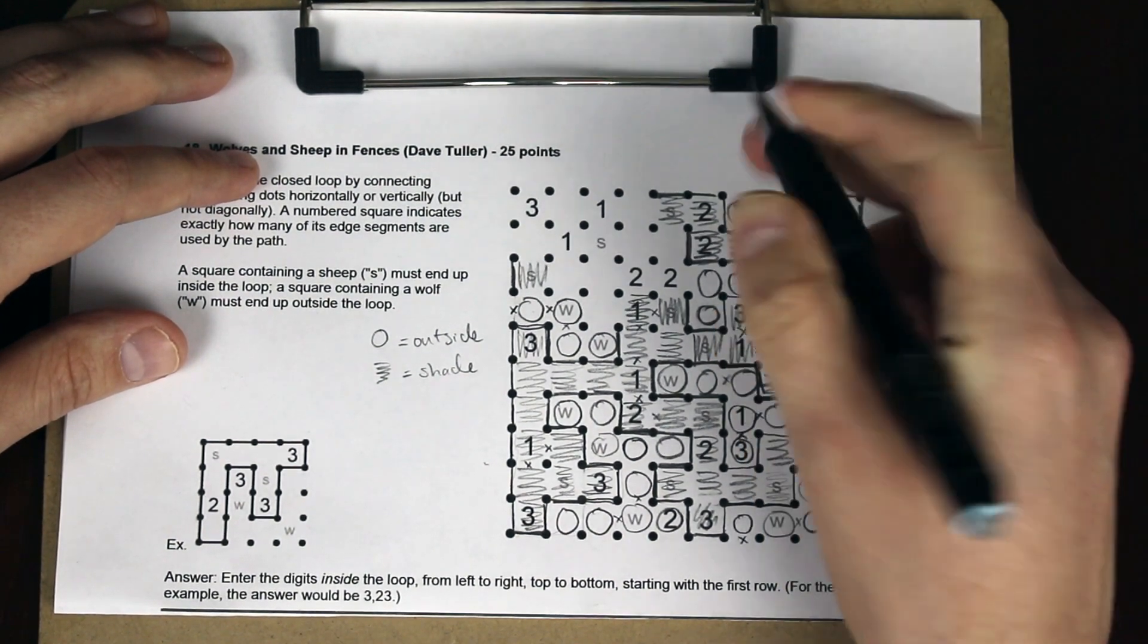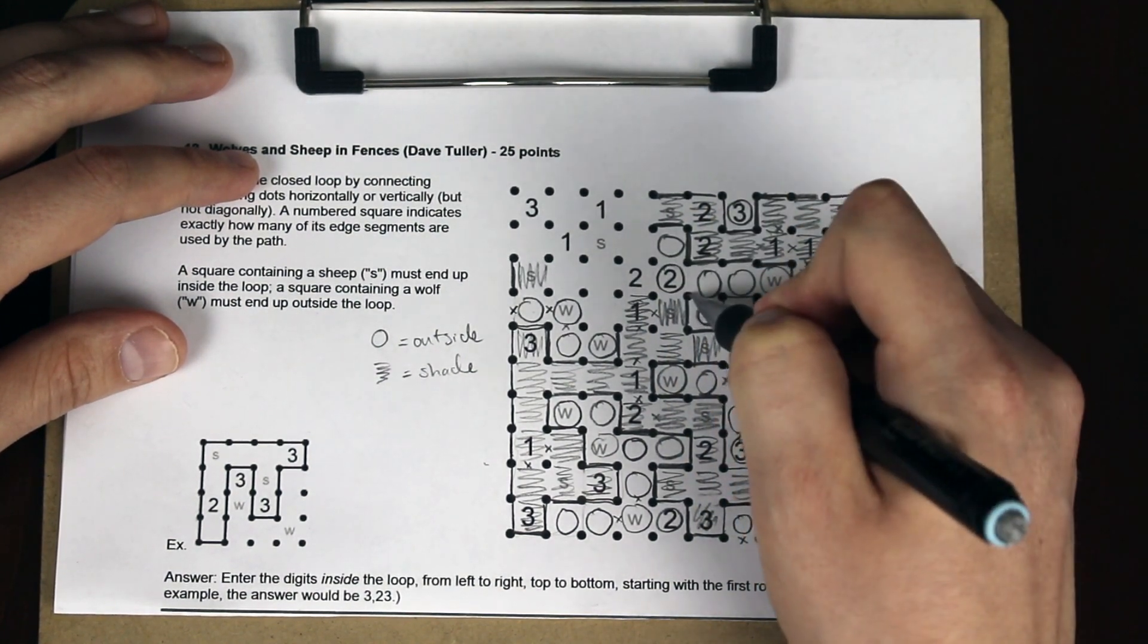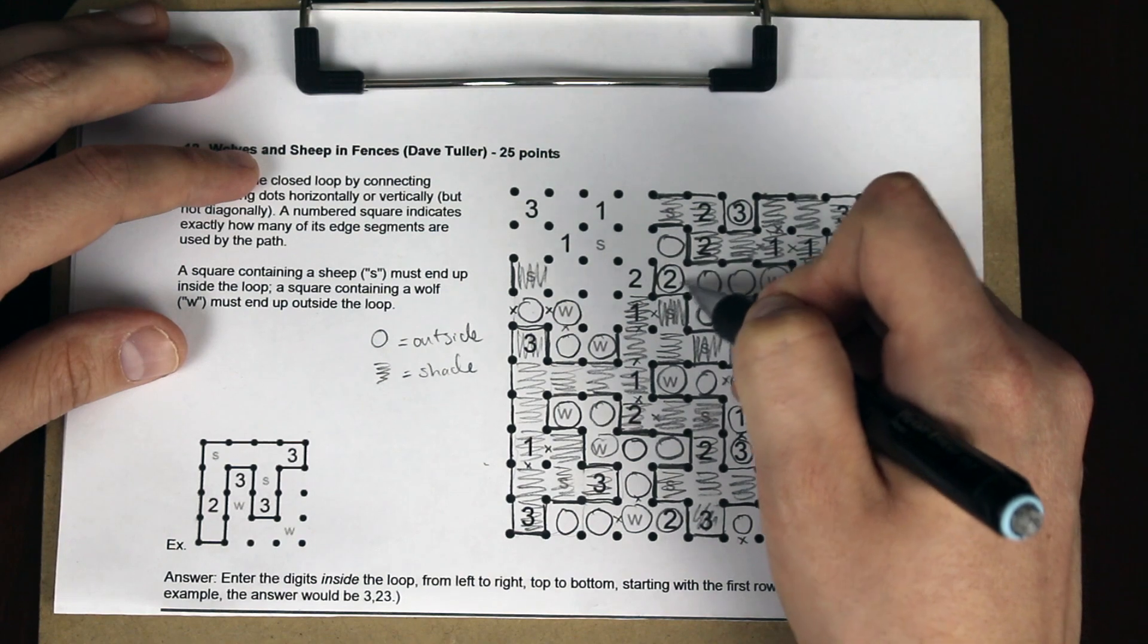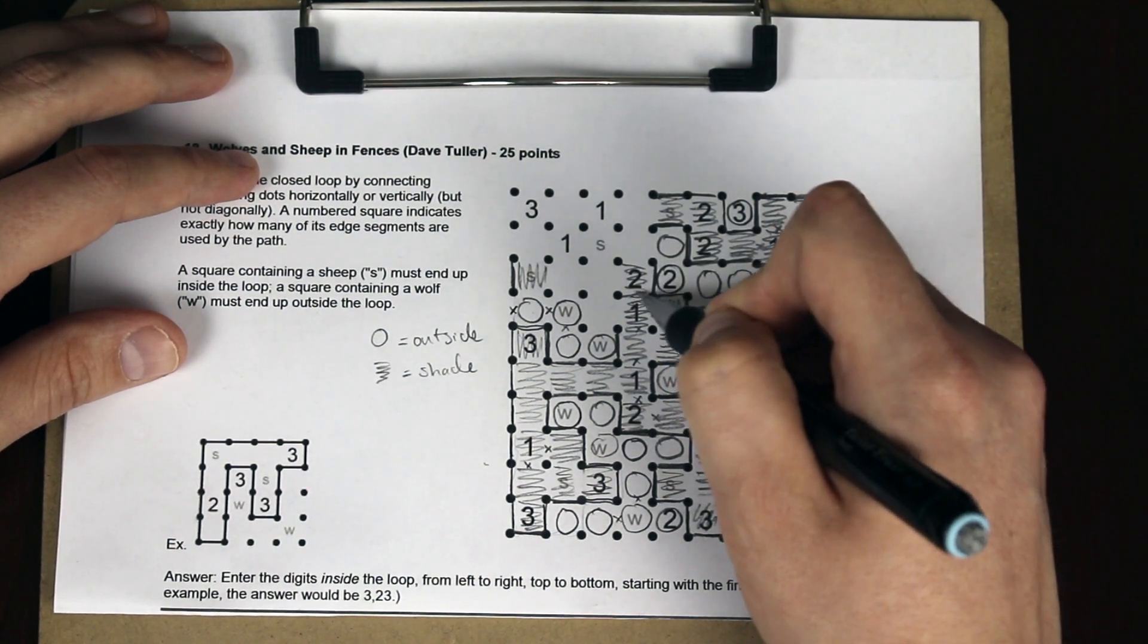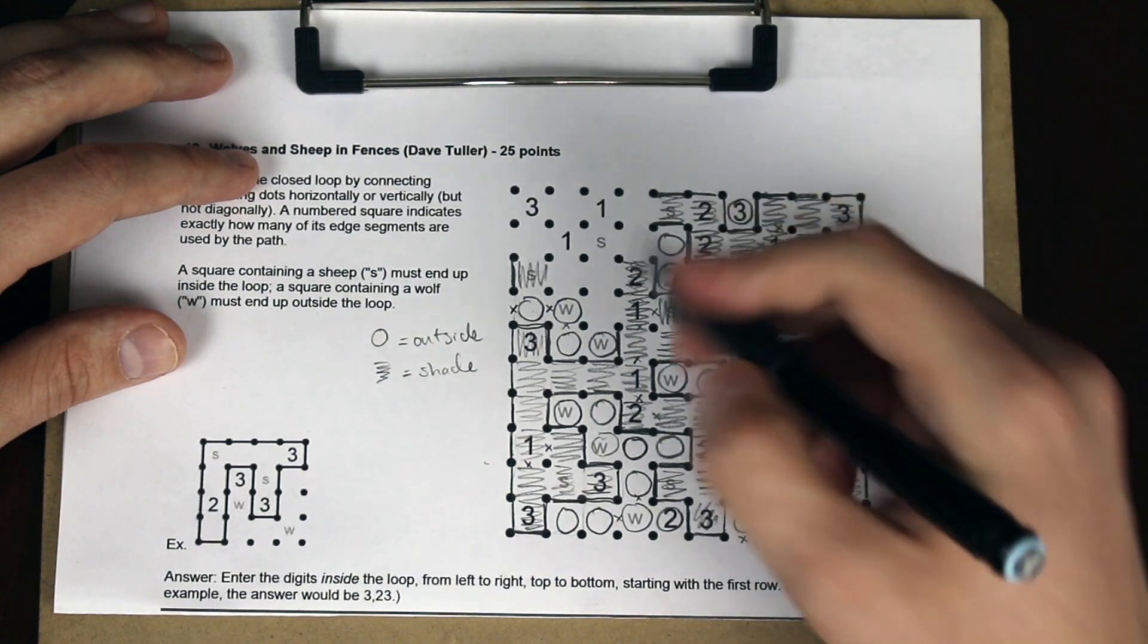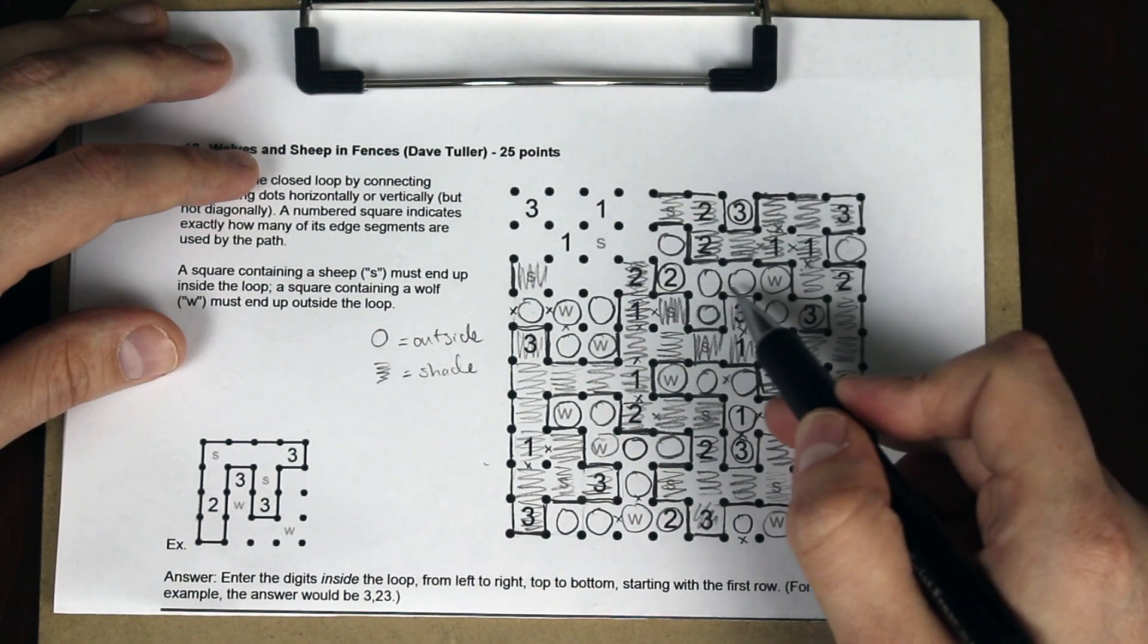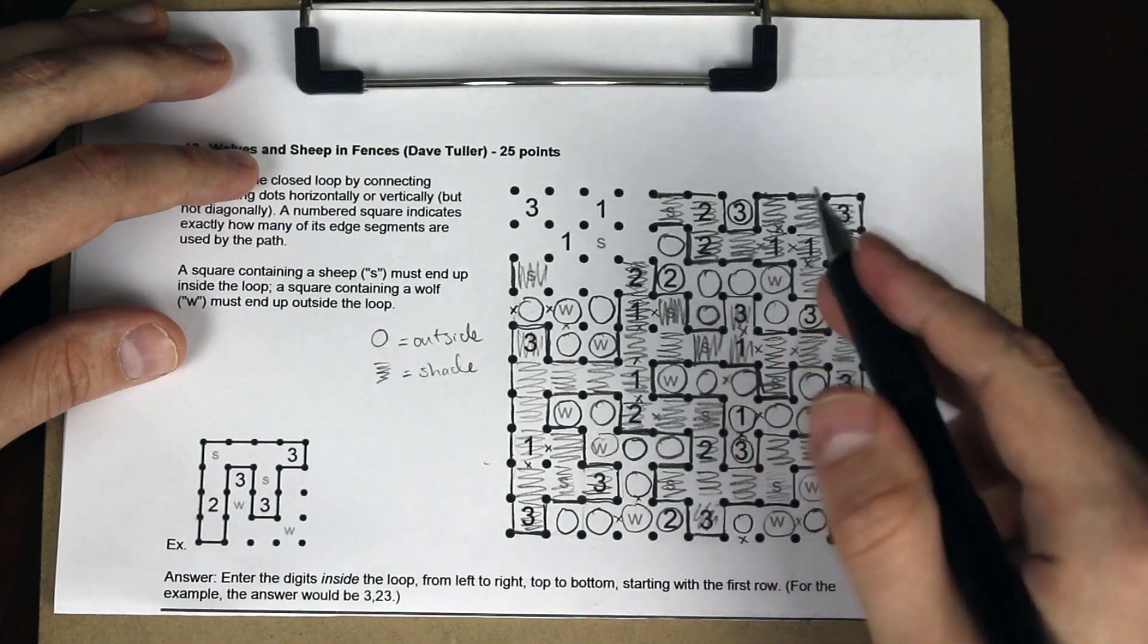These two squares are now also inside the loop. This line segment has to be there to make the border because this square is inside the loop. That gives us these two squares, which means the three is outside the loop. The two is inside the loop. The sheep is inside the loop. This must also be inside the loop because this two is filled.